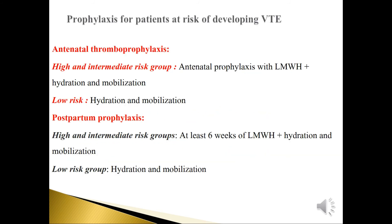High and intermediate risk groups require antenatal prophylaxis with heparin plus hydration and mobilization. Low risk groups require only hydration and mobilization. In the postpartum period, high and intermediate risk groups should receive at least 6 weeks of low molecular weight heparin plus hydration and mobilization, while low risk groups need only hydration and mobilization.